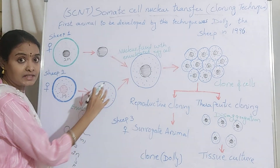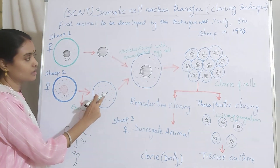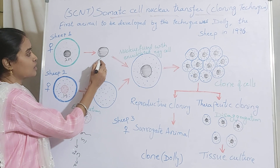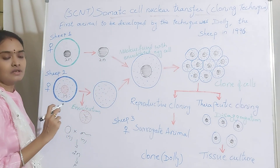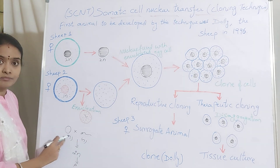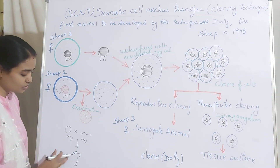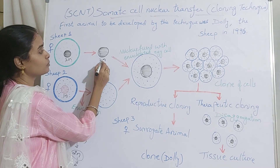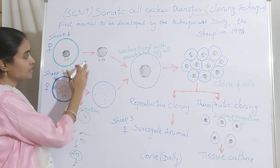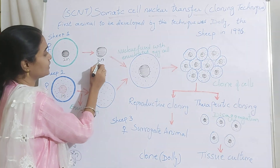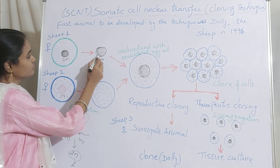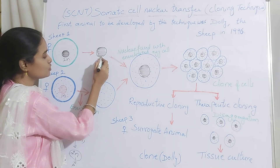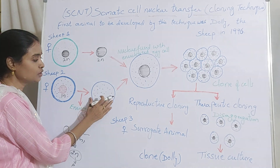Now this is the egg cell which doesn't have any nucleus. Whereas from the somatic cell they have taken the somatic nucleus — the 2N diploid nucleus. Normally when the egg and the sperm undergo fertilization, then only you get the 2N from which the baby is produced. But here they have taken the somatic cell, not the gametic cell, with no fertilization. They have isolated this diploid nucleus from the somatic cell and introduced it into the enucleated egg cell.